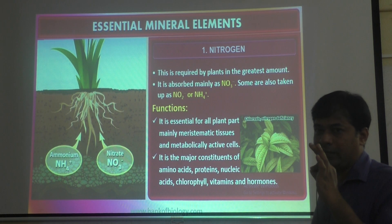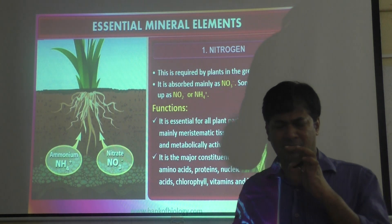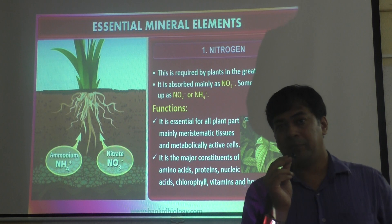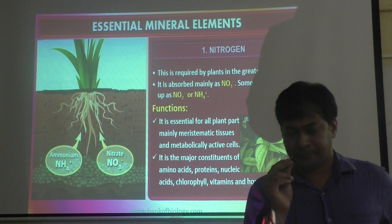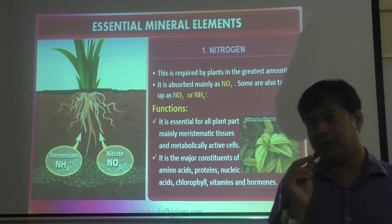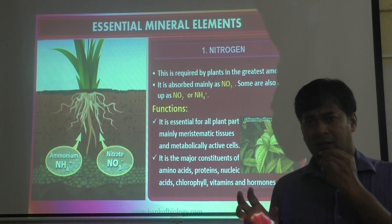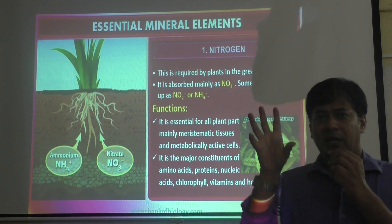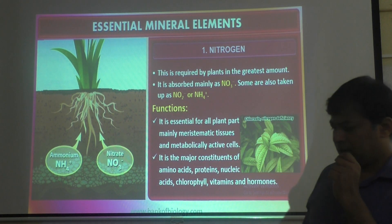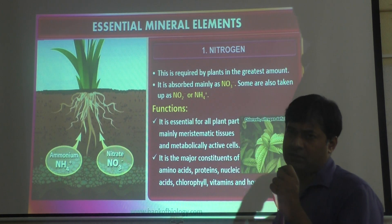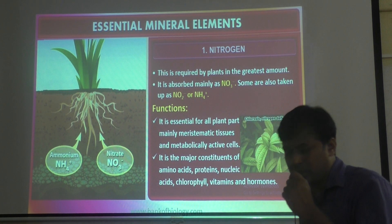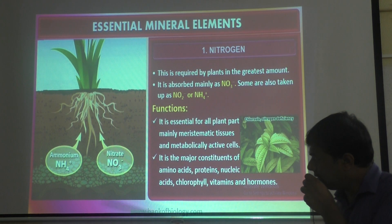How does nitrate come into the soil? Nitrogen gas is present in the atmosphere — 78% nitrogen is there. Some bacteria called nitrogen-fixing bacteria, present in the soil, absorb gaseous nitrogen and convert it to nitrite and nitrate. In the nitrogen cycle, these bacteria convert nitrogen to ammonia and nitrate, so nitrogen is present in the soil as either nitrate or ammonium ions.